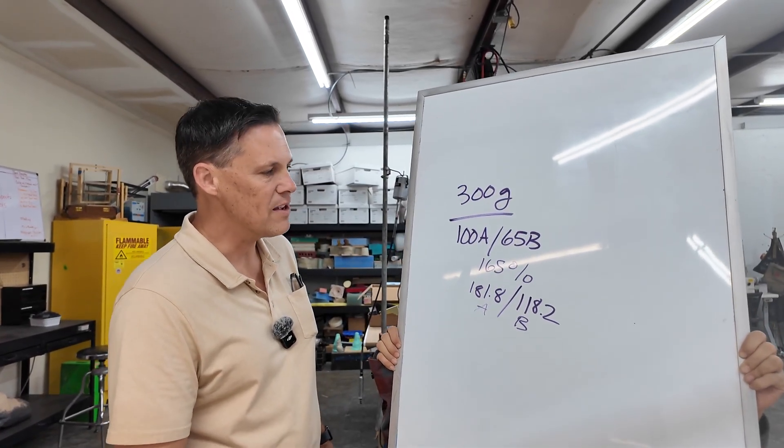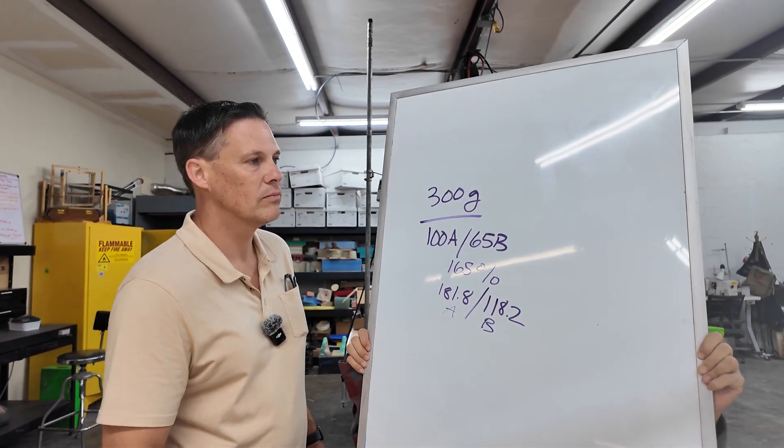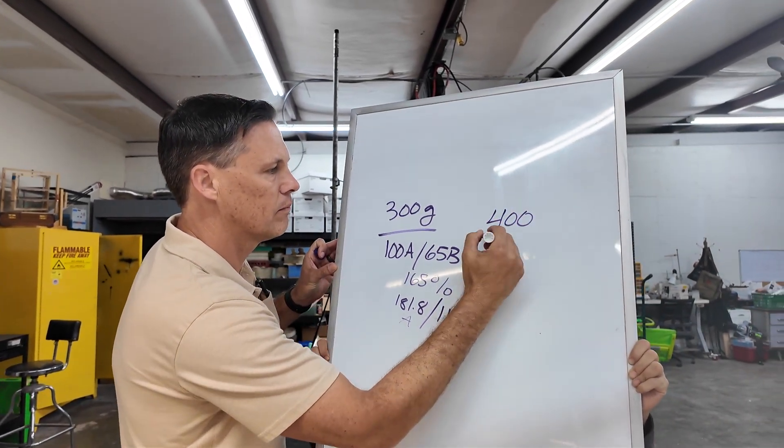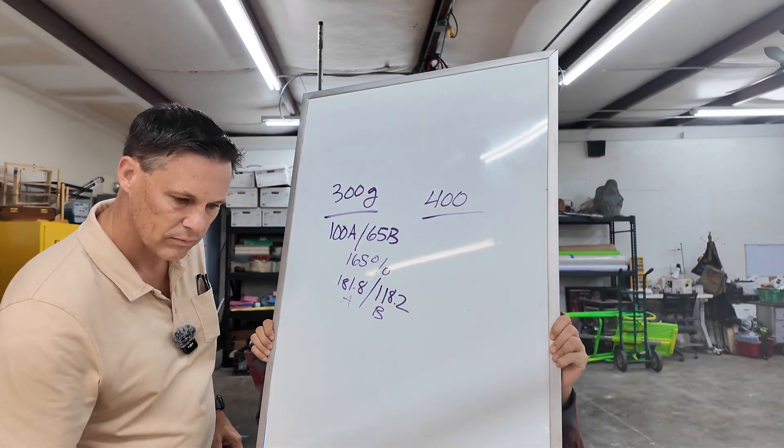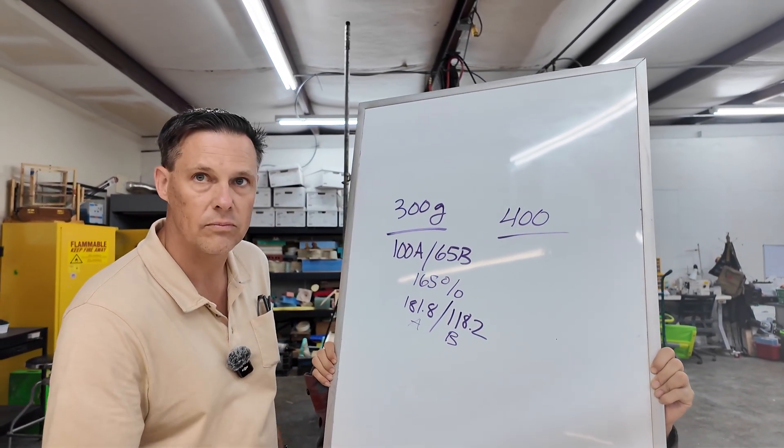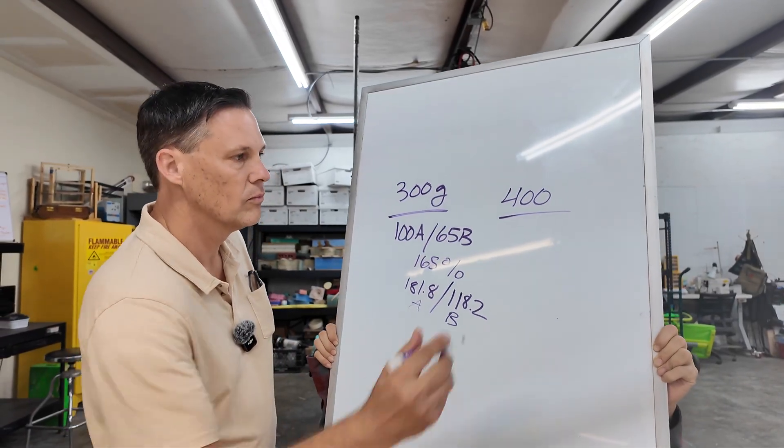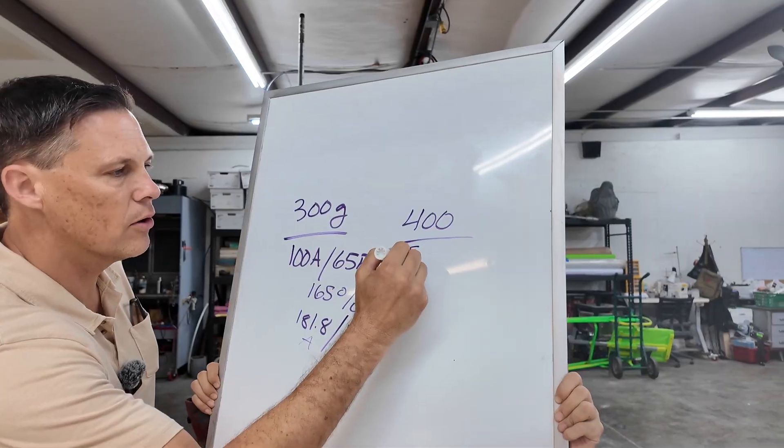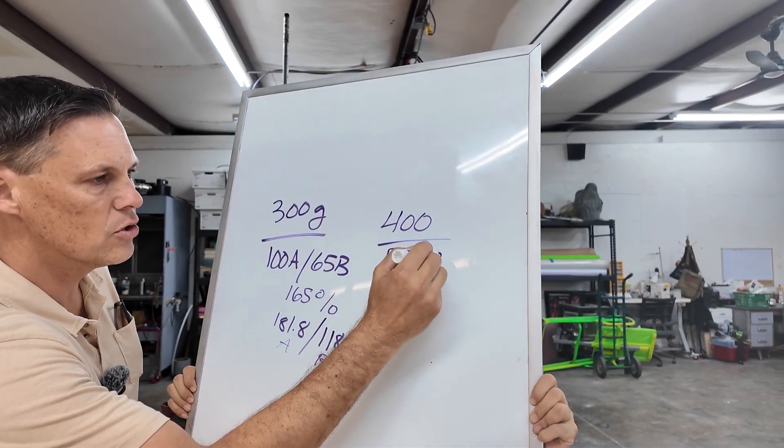Just for the slow guys like myself, could we do this again with 400 grams? If it was a one-to-one mix ratio, that would be pretty simple, 200 grams A to 200 grams B. Let's say it's a 400-gram batch, and this time we're doing TC266, which is a two-to-one mix ratio, or 50 to 100. So we've got 50 parts A to 100 parts B.